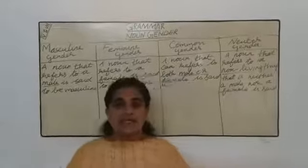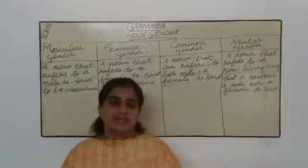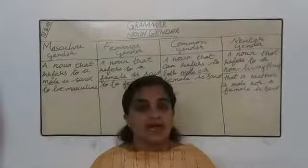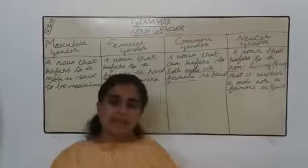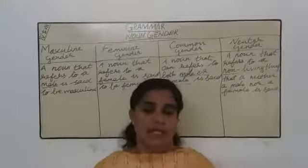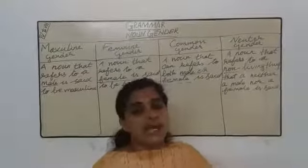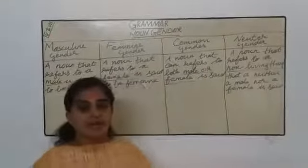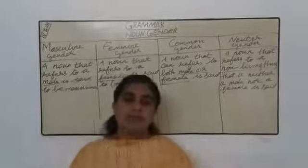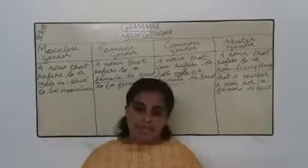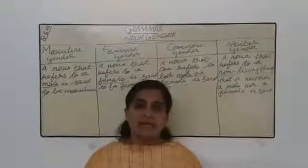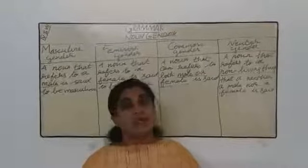Today we are going to discuss about a new topic: noun gender. Gender meaning — it may be male or female. Noun gender is divided into four groups: masculine gender noun, feminine gender noun, common gender noun, and neuter gender noun.